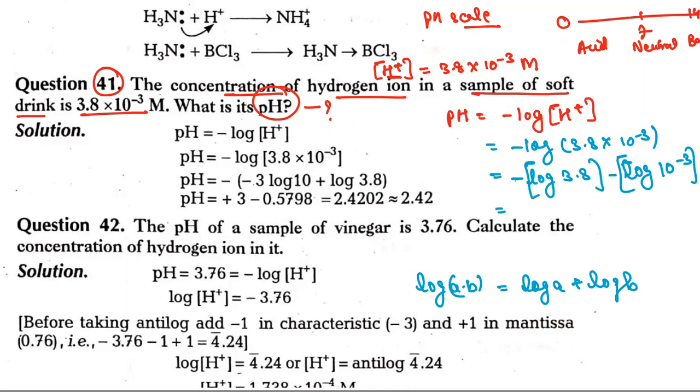The log 3.8 value can be calculated. If we have log of 10 to the power minus 3, then we have to solve this form like log a to the power b.